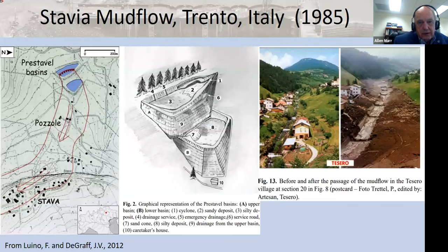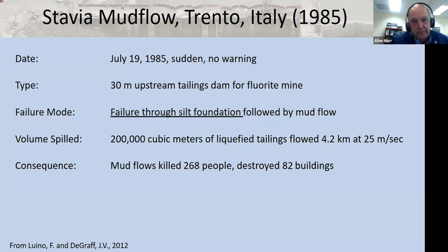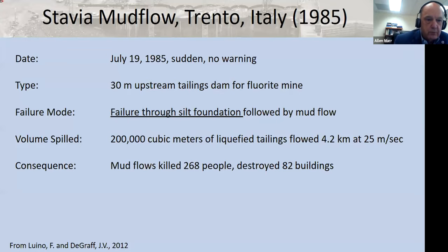In Italy in 1985, a tragic failure of a tailings dam inundated the village of Stavia. Again sudden, no warning — a tailings dam made by the upstream method failed through the silt foundation. That let loose tailings that developed into a mud flow of liquefied tailings, flowing at a very rapid rate downstream, killing 268 people and destroying a large amount of property.